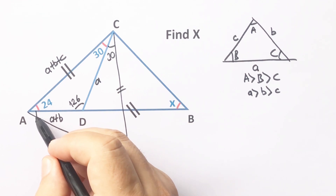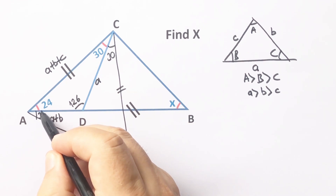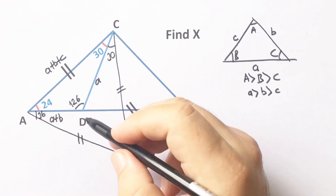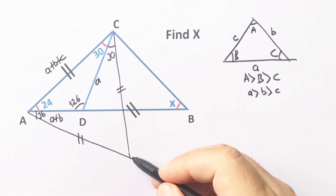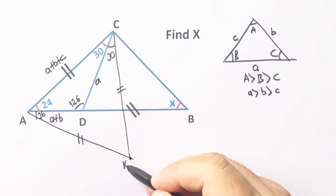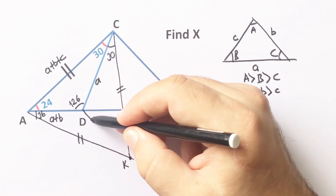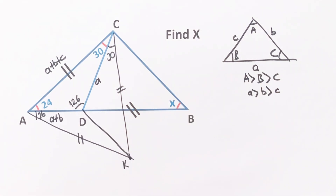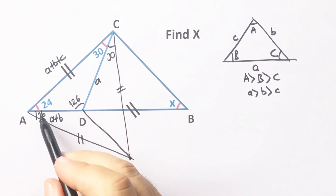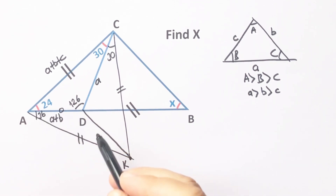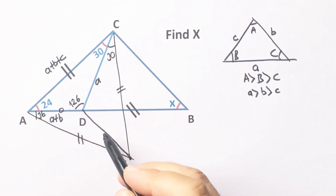Therefore here must be 36 degrees. Then let's call this point K. If we connect D and K like this, we get an isosceles triangle.